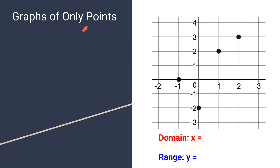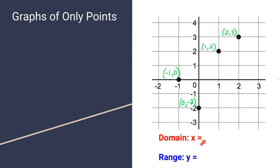This is an example of a graph that only has points. In this graph, there are points at negative 1, 0; then 0, negative 2; then 1, 2; and 2, 3. When writing the domain, you go to each coordinate and list the x values: negative 1, 0, 1, and 2. For the range, working from bottom to top, the y outputs are negative 2, 0, 2, and 3. Listing those out is all you have to do to write the domain and range of this kind of graph.